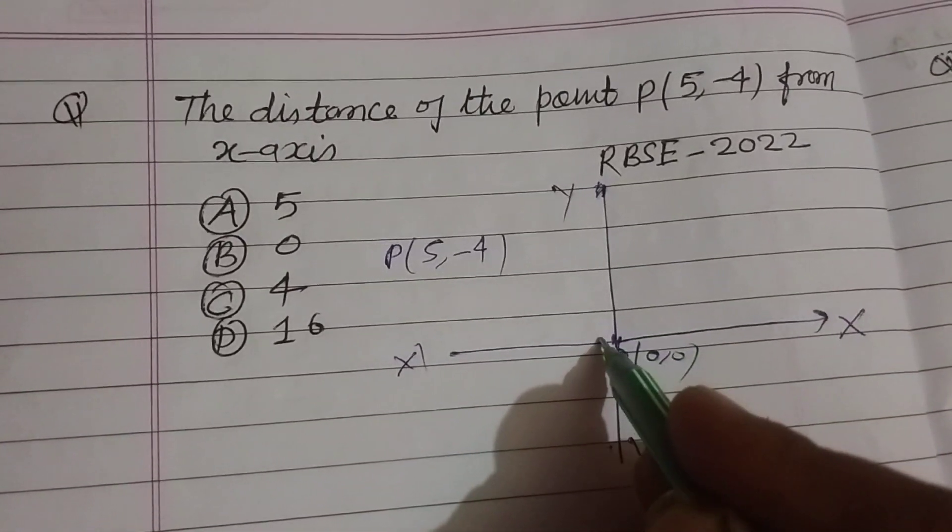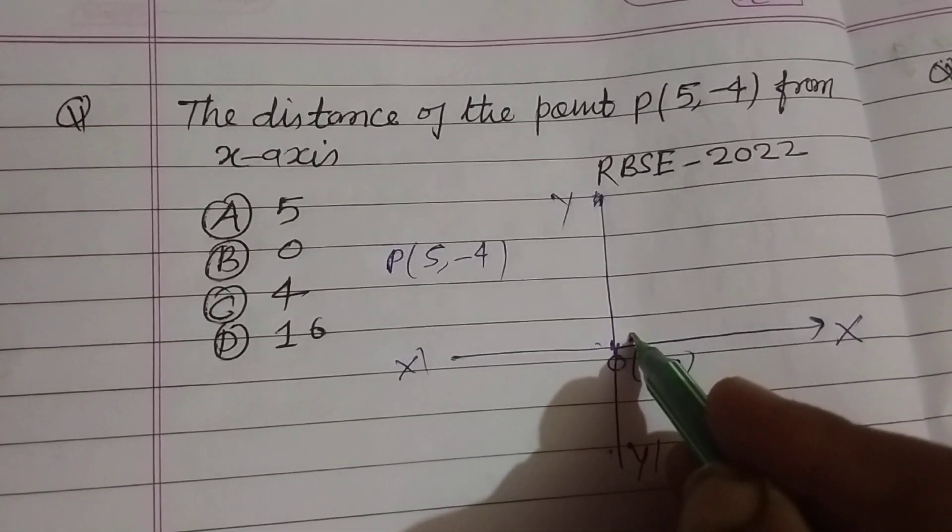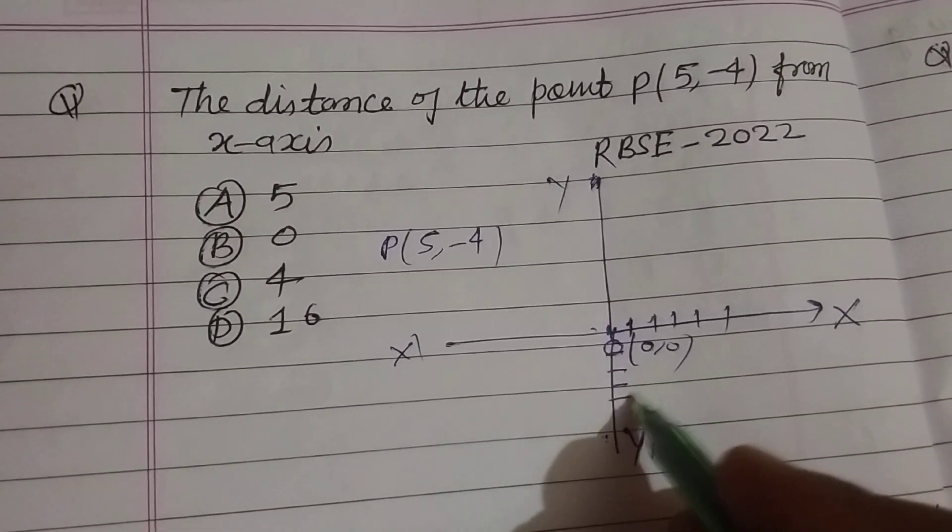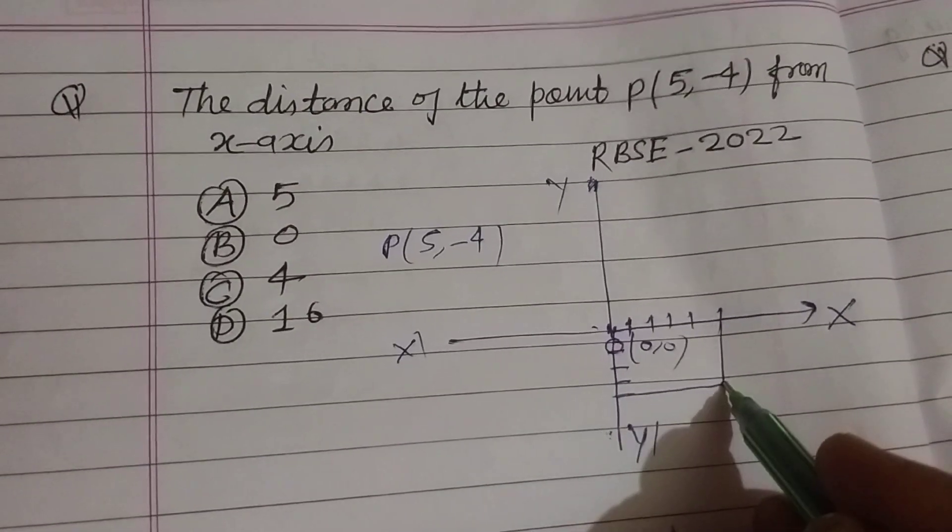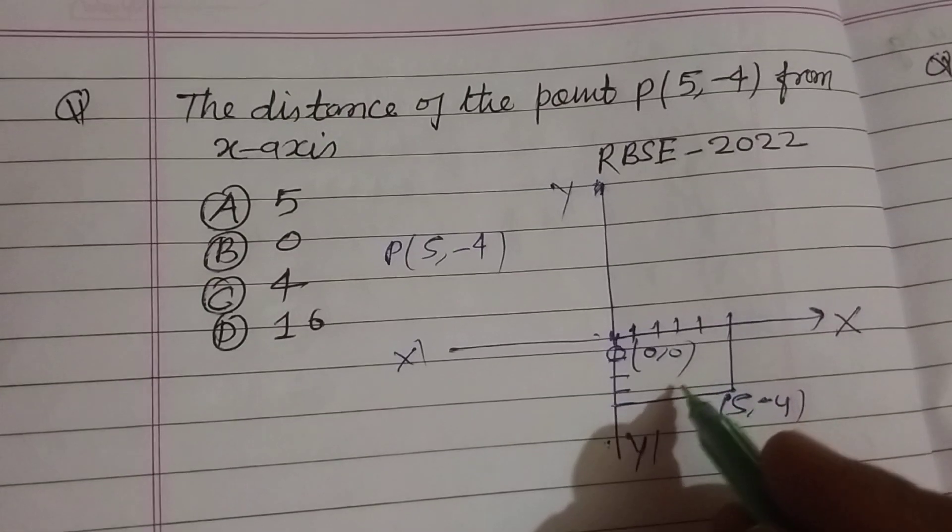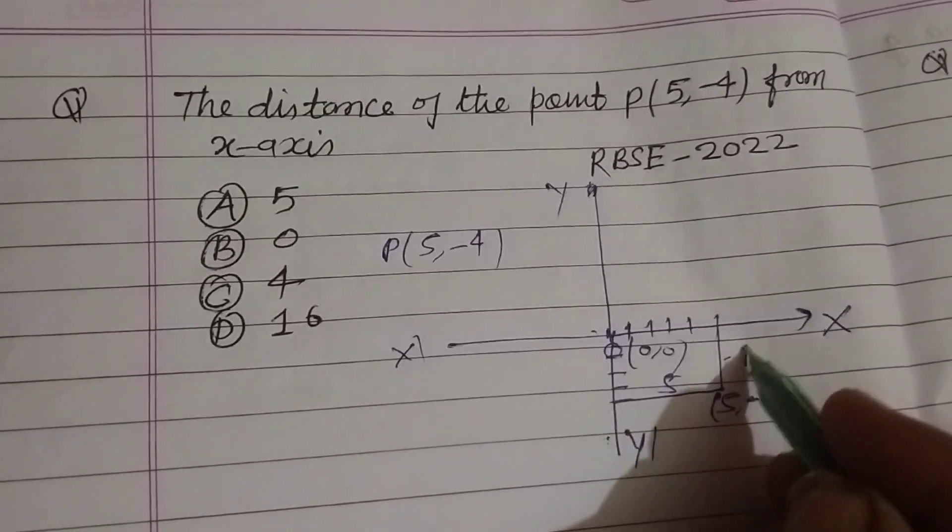So 5, 1, 2, 3, 4, 5 and this is 4, 1, 2, 3, 4. So the location of the point is (5, -4) and this distance is 5 and this distance is minus 4.